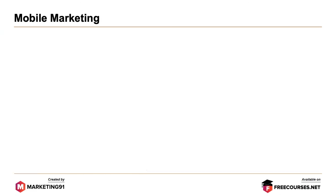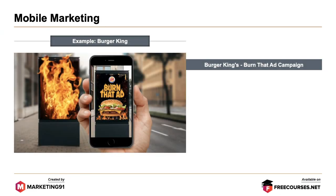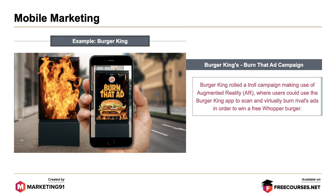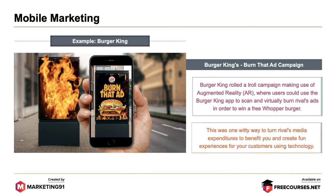Next, mobile marketing. The example is Burger King's Burn That Ad campaign. Burger King rolled out a troll campaign making use of augmented reality where users could use the Burger King app to scan and virtually burn rivals' ads in order to win a free Whopper burger. This was one witty way to turn rivals' media expenditure to your benefit and create fun experiences for customers using this technology.